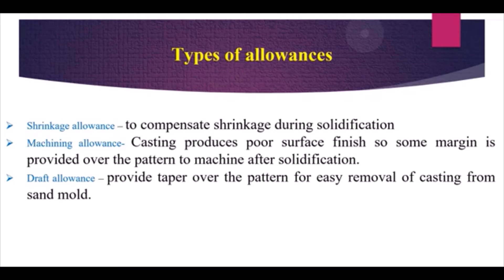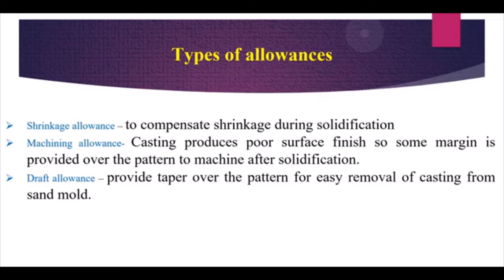Draft allowance provides a taper over the pattern for easy removal of the casting from the sand mold. For example, if the mold is 35 mm and you require 30 mm, you give around 33 mm so there is enough material but it can still be easily removed. Considering all these allowances together, you get the final finished product.